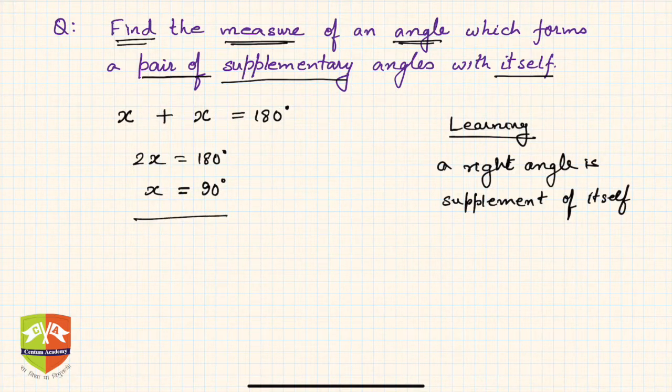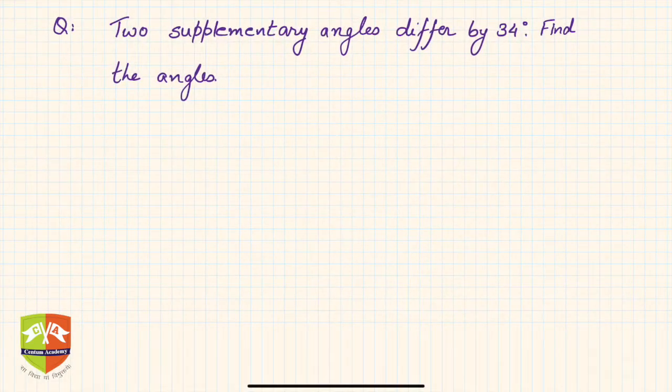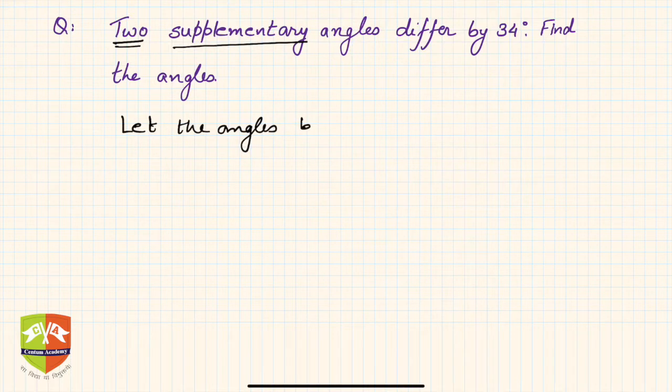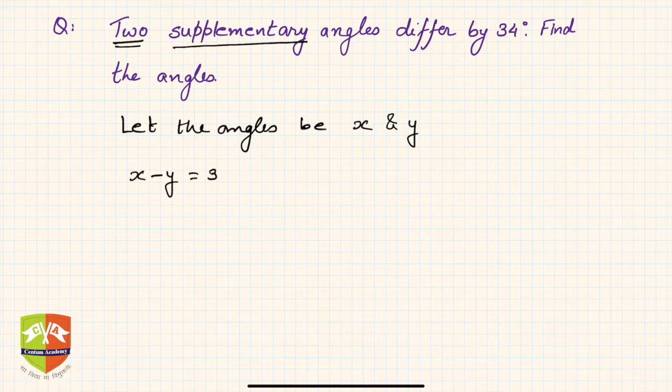Next, the second problem says two supplementary angles differ by 34 degrees, find the angles. So information: two supplementary angles. Let the angles be x and y - these are the angle measures, not the angle itself. Now they differ by 34 degrees, so x minus y is 34 degrees. You have to find out the angles.